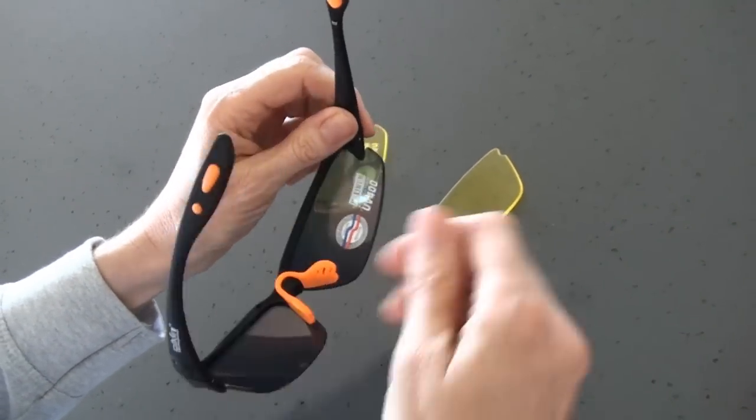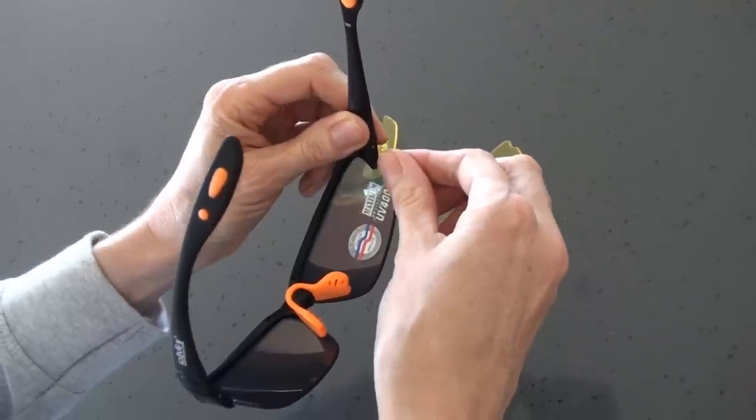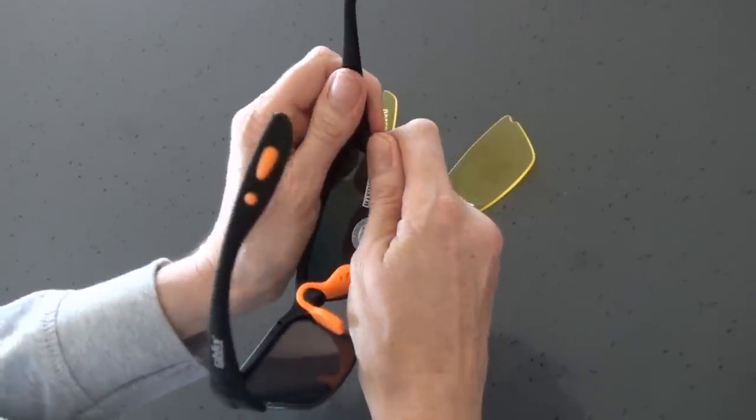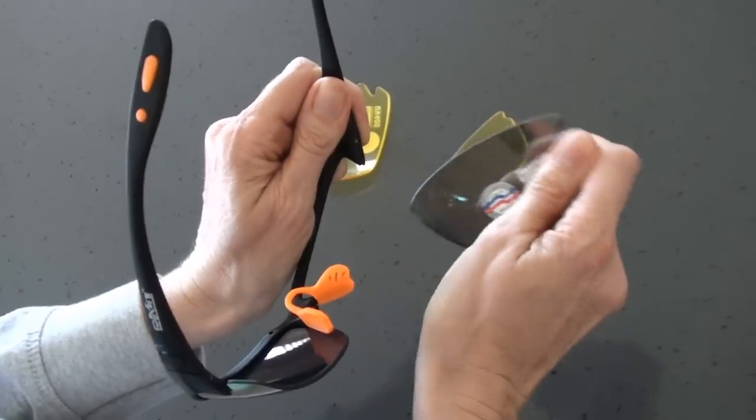and then the lenses one by one. Start on the outside edge, pull down on the lens, up on the frame, flexes up, and they pop off.